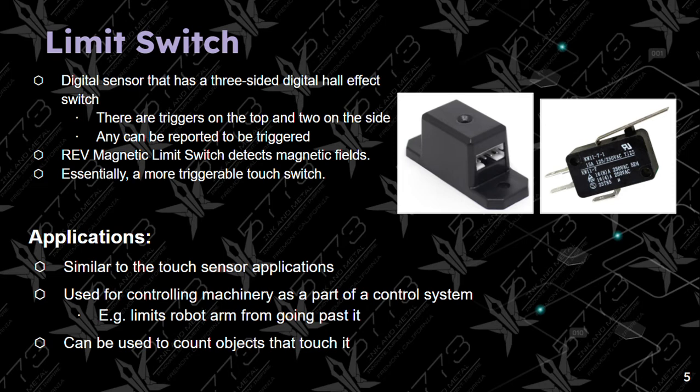Its applications are similar to the touch sensor. It is used for controlling machinery as part of a control system. For example, it could limit a robot arm from going past a certain point. It can also be used to count objects that touch it.